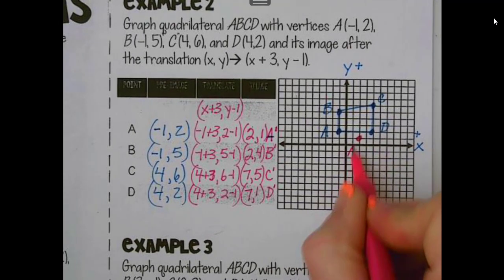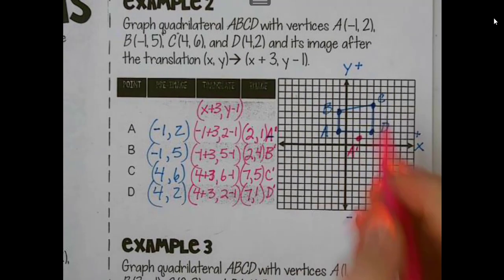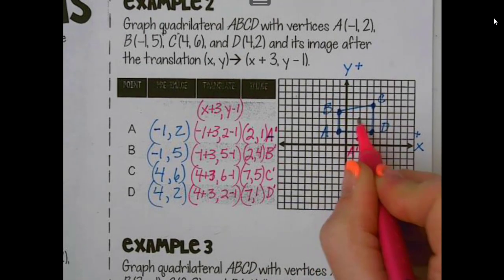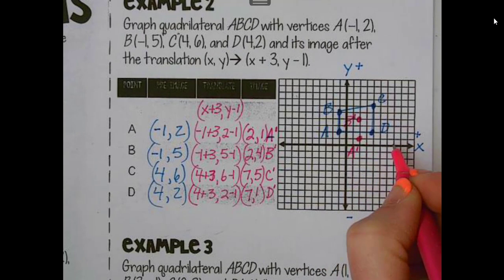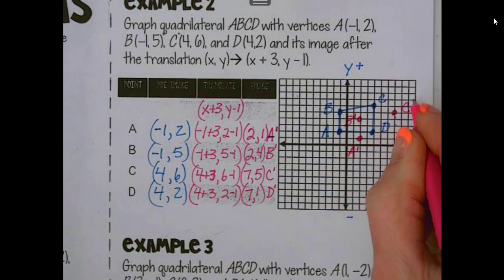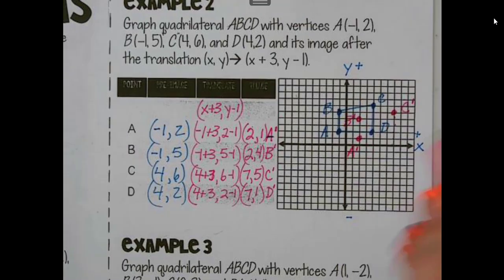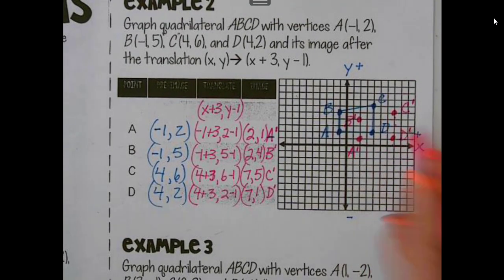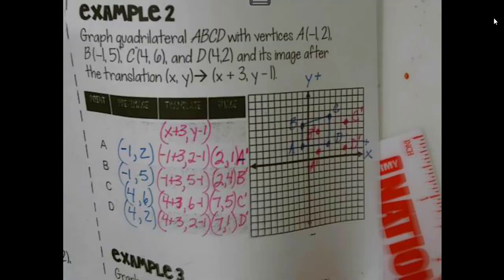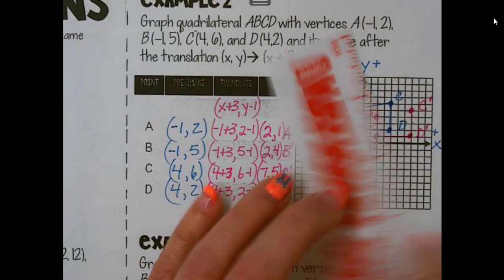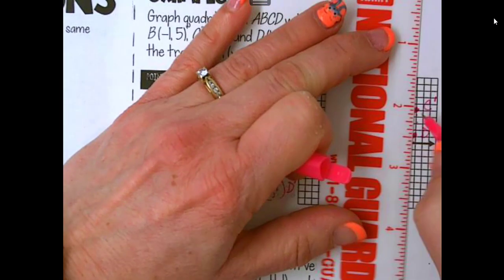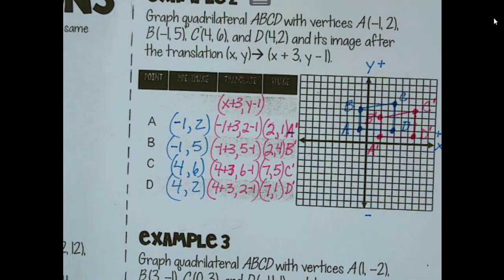So 2, 1. And make sure you label that. That's A prime. And then 2, 4, B prime. And sometimes these overlap and that's okay. 7, 5, there's our C prime. And then last but not least, our D prime is 7, 1. So I take my ruler, grab it here, and go ahead and nice straight side here. And awesome. It's the same shape. We just ended up translating it three to the right and one down.